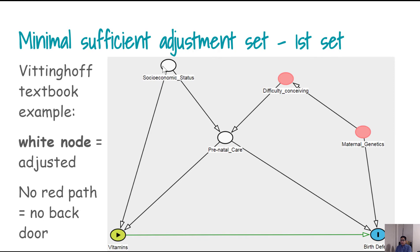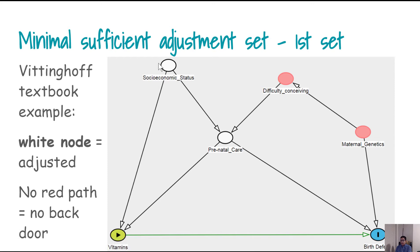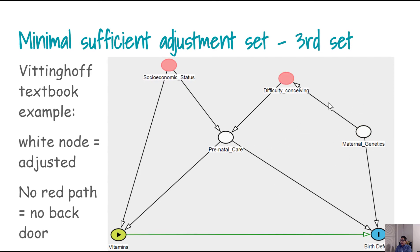The idea of the minimal adjustment set is that you can choose a set of variables that is sufficient to adjust for all biasing paths in your data. We adjusted for the first pair — no more red lines. Then a second pair — no biasing path. Then a third pair — again no biasing path. So instead of focusing on one variable, think about what minimum set of variables you need to eliminate all biasing paths.